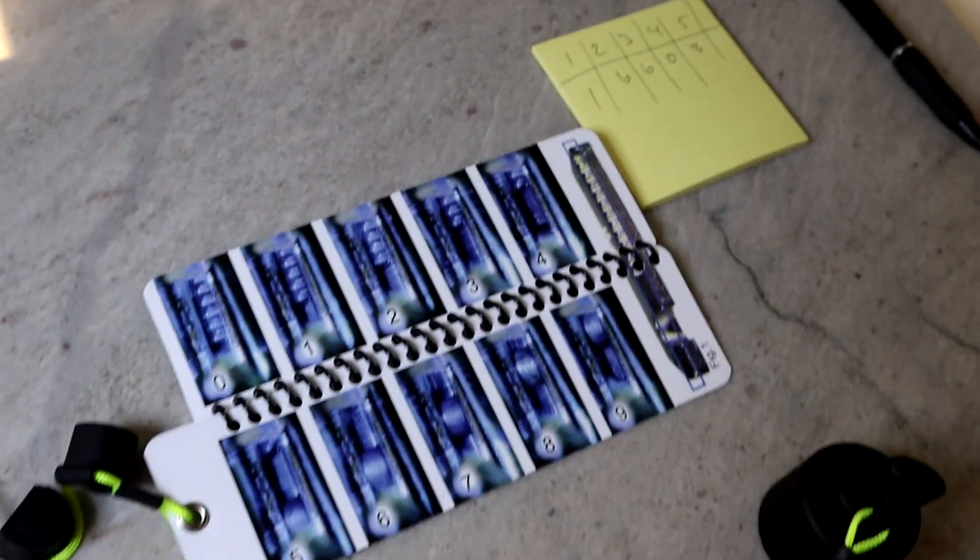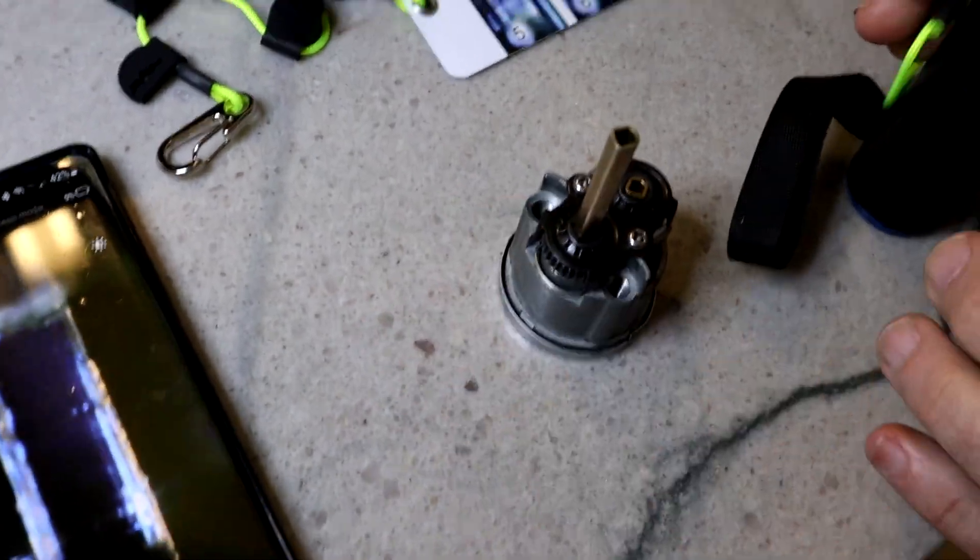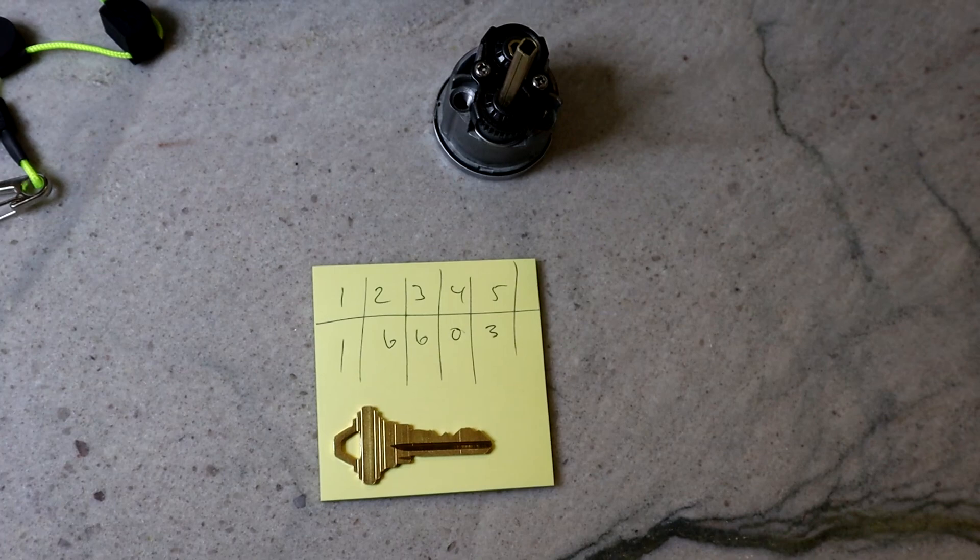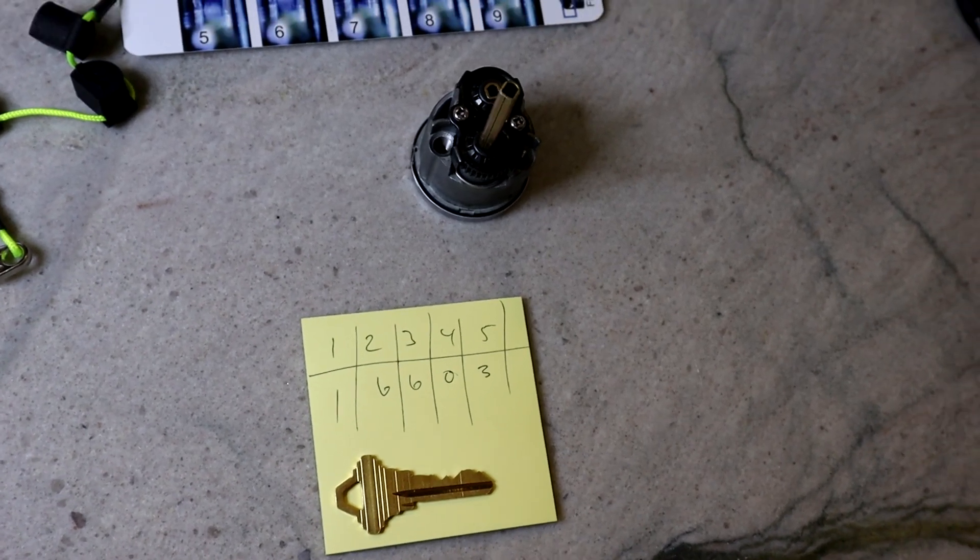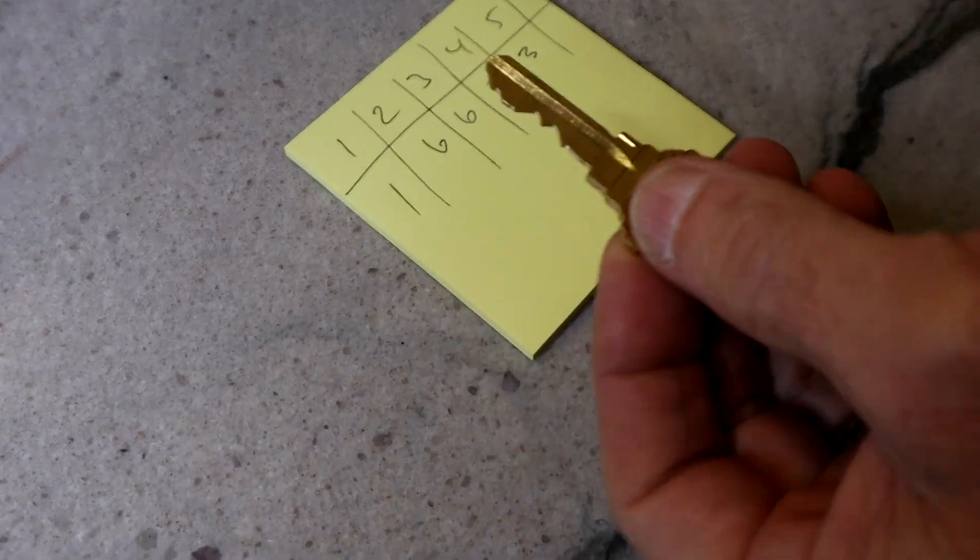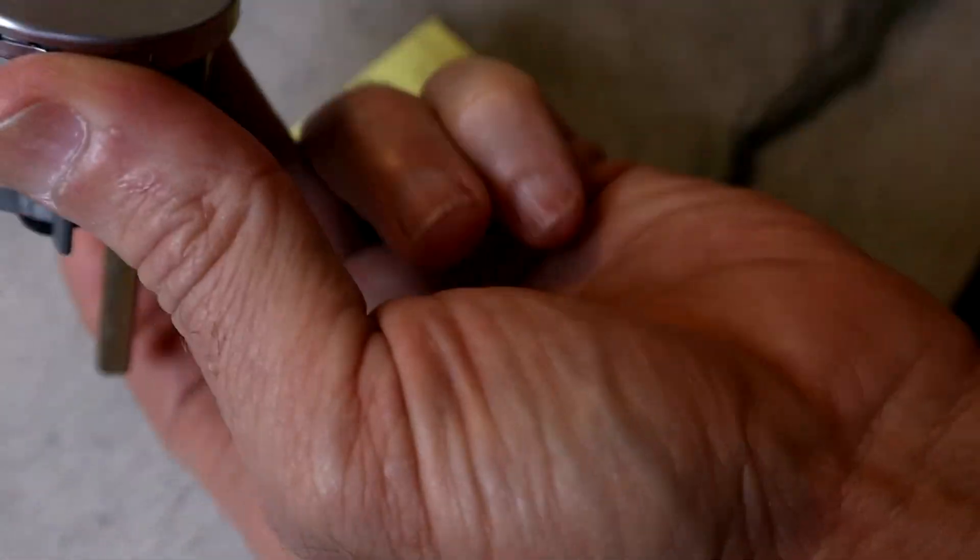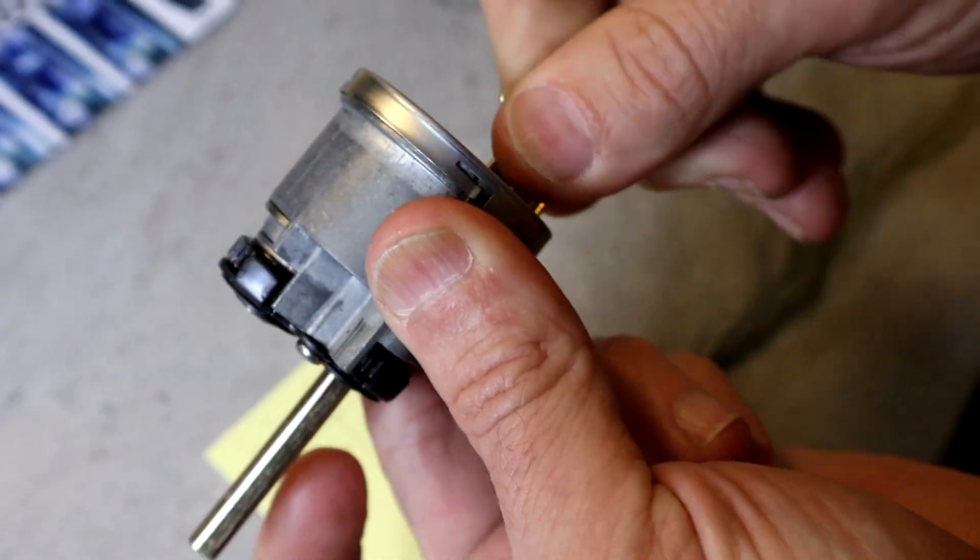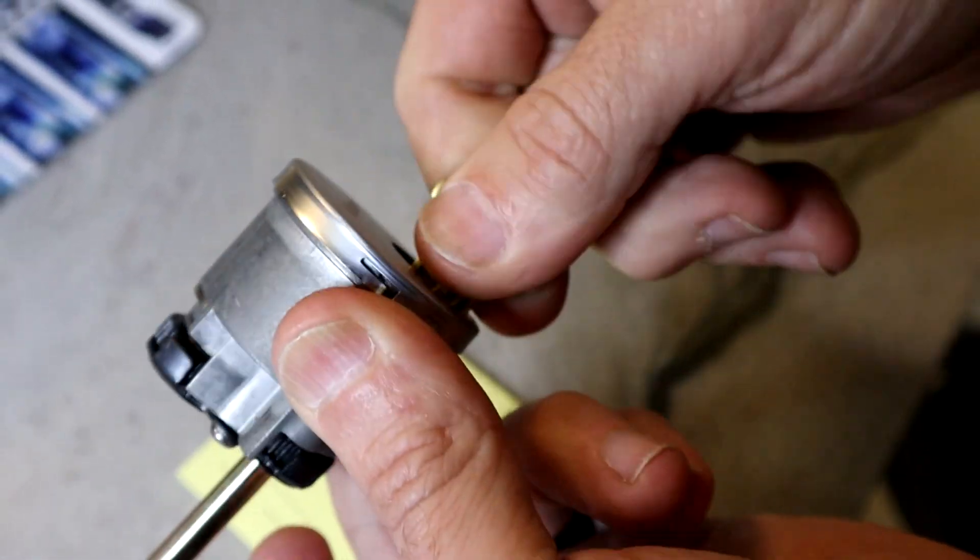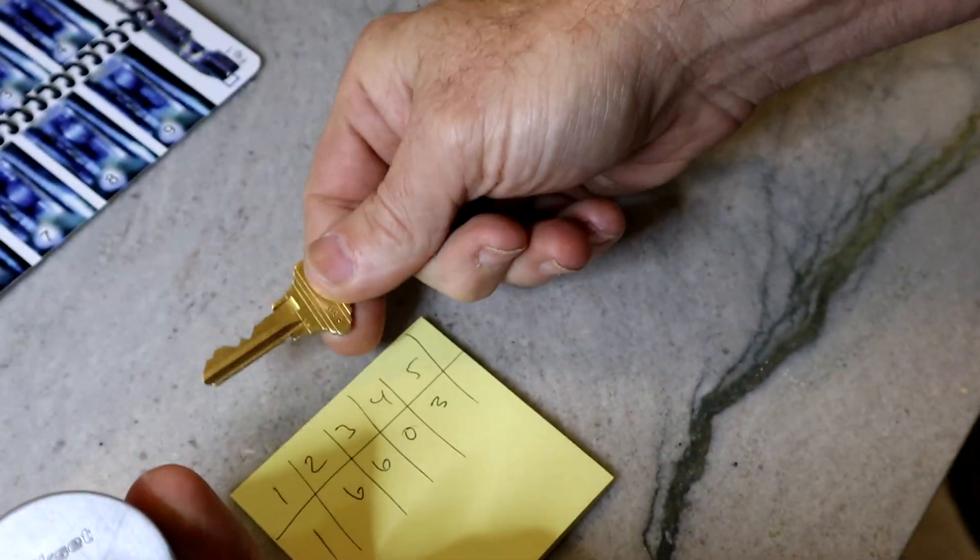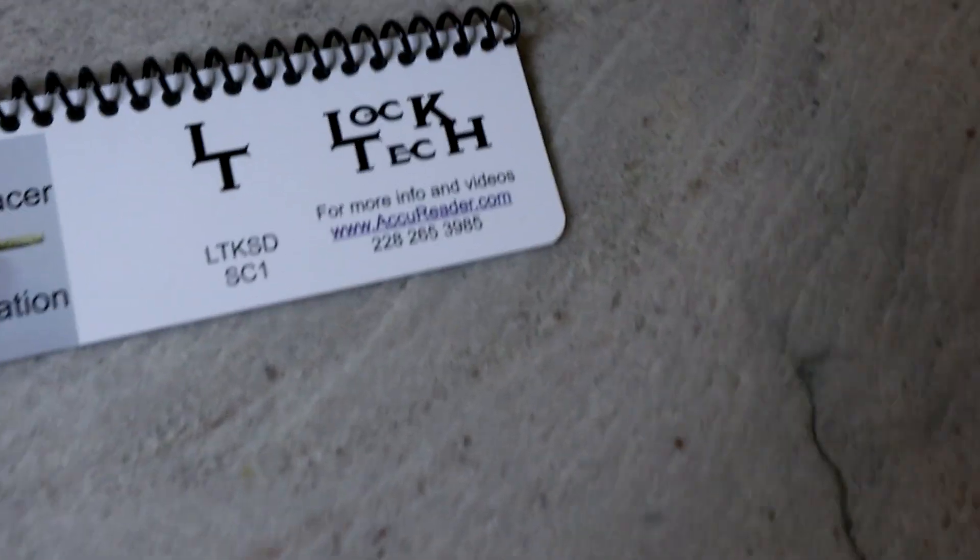So there's our cuts: one, six, six, zero, three. I will go cut a key to that, and we'll come back and see if it operates the lock. We're back with the key that's cut to one, six, six, zero, three. We'll go ahead and see if it operates the lock. Yes, it does. So there you have it - decoded smart key QuickSet lock for the SC1 keyway.